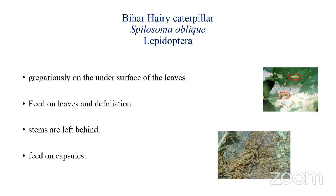The next pest is the Bihar hairy caterpillar, Spilosoma obliqua. This pest also attacks groundnut. It normally occurs during late season — October to December it will be in excess. The young larvae feed gregariously on the under surface of the leaves, causing defoliation. In severe cases, only the stem is left behind. In defoliated crops, the pest also feeds on the capsules.